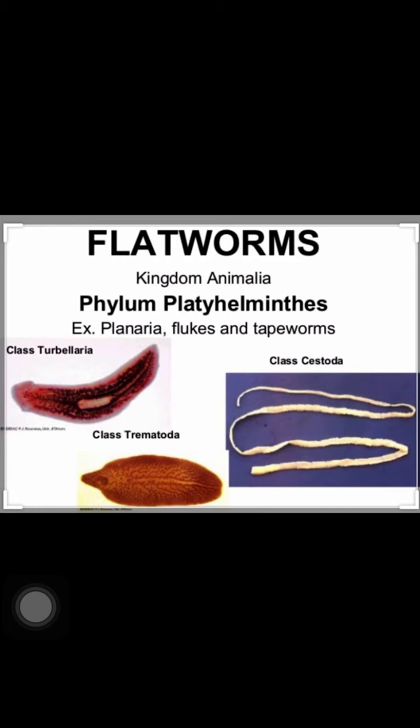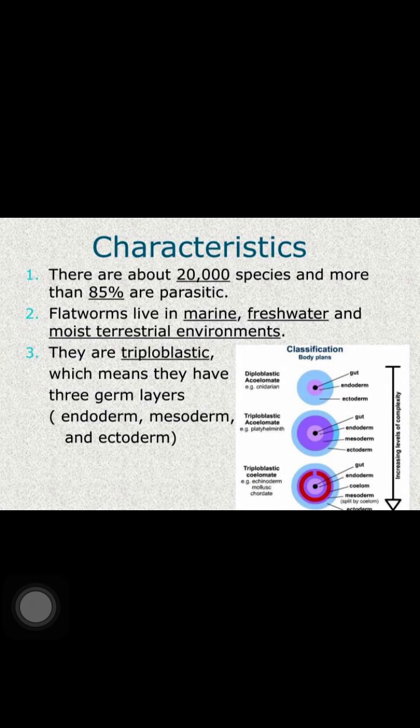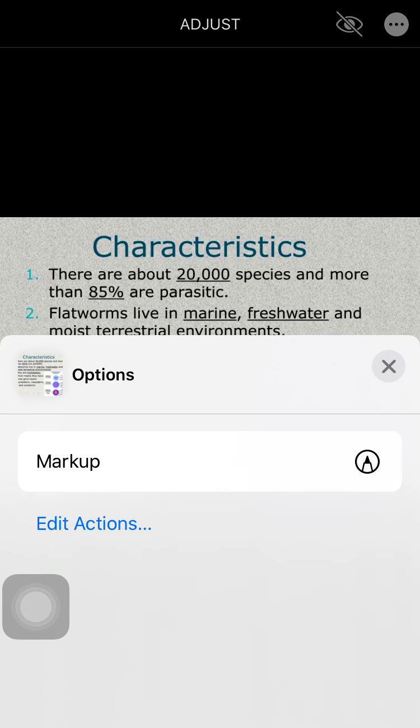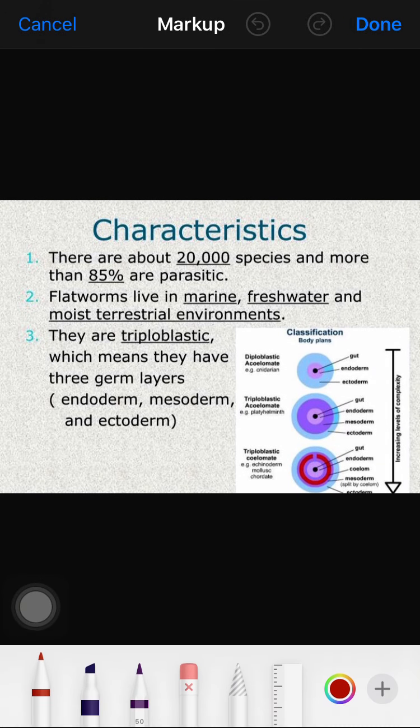Now we start with the characteristics of this phylum. This phylum has three classes: Turbellaria, Cestoda, and Trematoda. Characteristic-wise, there are a large number of species — near about 20,000 species — and more than 85% are parasites.